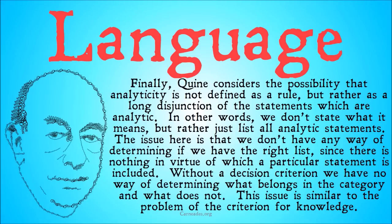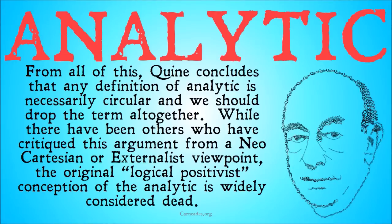This issue is similar to the problem of the criterion in epistemology. From all of this, Quine concludes that any definition of 'analytic' is necessarily circular, and we should drop the term altogether. While there have been others after Quine who have critiqued this argument from a neocartesian or externalist viewpoint, the original logical positivist conception of the analytic is widely considered dead due to this paper, Two Dogmas of Empiricism. It's available online for free if you want to check it out. Hopefully we'll do another video working more broadly with the paper and talking about Quine's bigger project against the logical positivists.